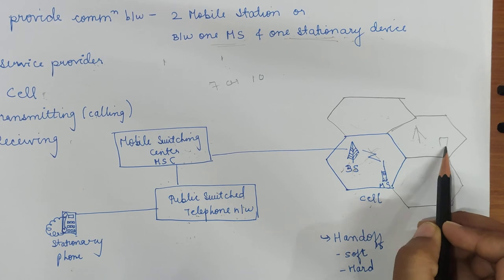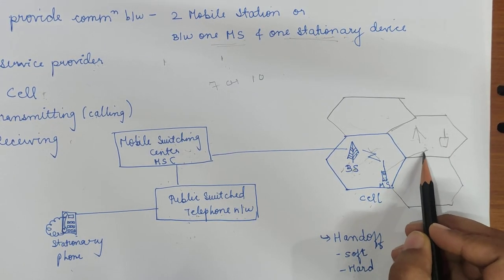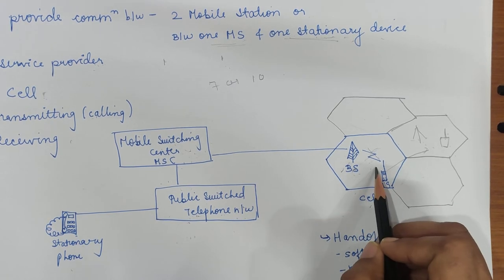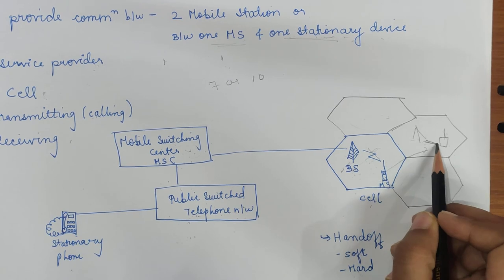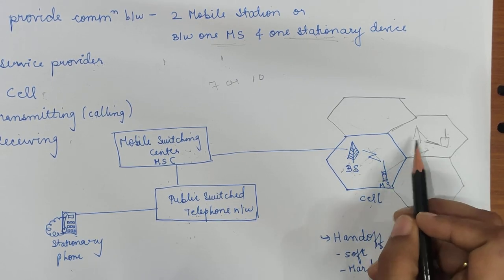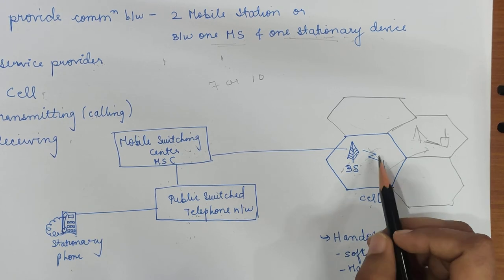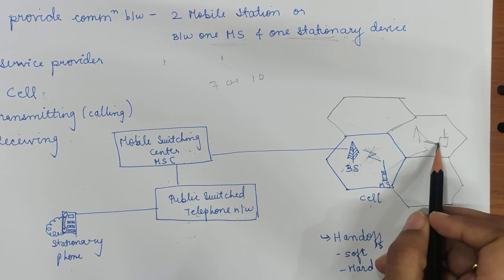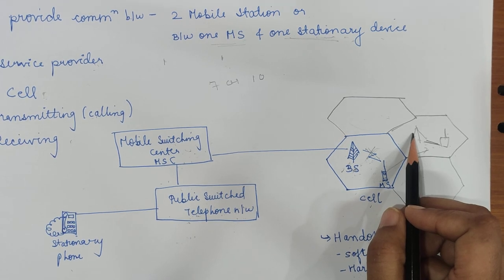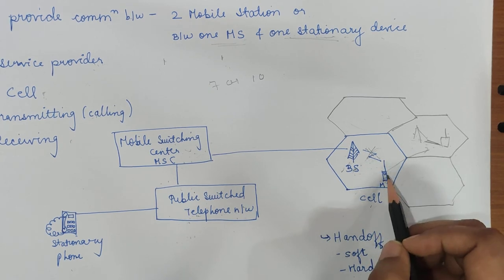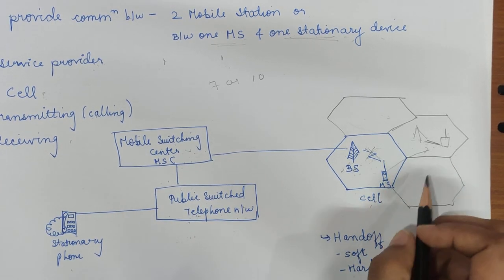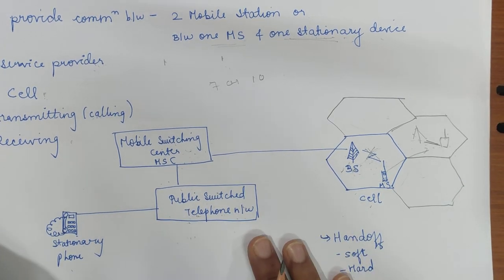In a soft handoff, as the mobile station moves from one cell to another, before breaking the existing connection, it makes a connection with the new base station. So simultaneously it is connected to both base stations. This ensures that at least one base station connection is always present and the call is not terminated. A mobile station may continue with the new base station before breaking with the old one, allowing clear calls without interruption.